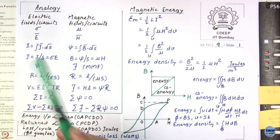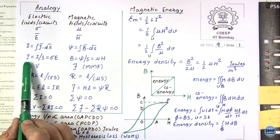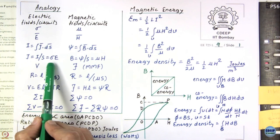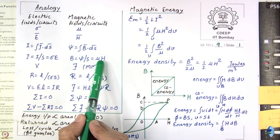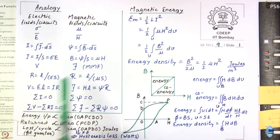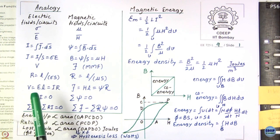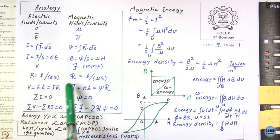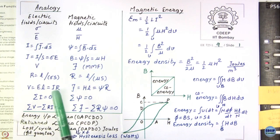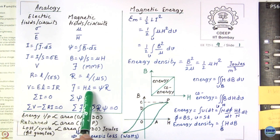Conductivity and permeability, electric field intensity and magnetic field intensity, current which is the open surface integral of J·dS, and flux which is the open surface integral of B·dS. Current density J = σE is the point form of Ohm's law, whereas B = flux/area = μH. V in electric field corresponds to MMF in magnetic fields. Resistance is L/(σS) and reluctance is L/(μ·area).